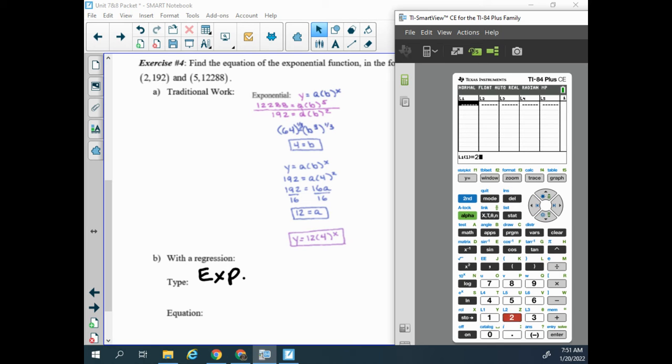So my first point is 2, and my second point has an x value of 5. My first point's y value is 192, and the second point's y value is the 12,288.